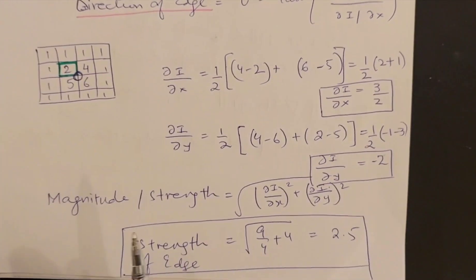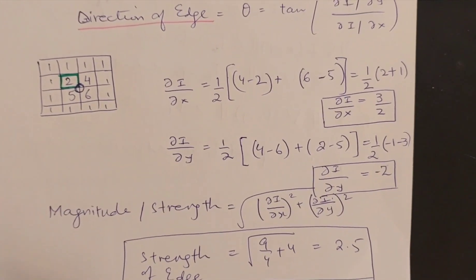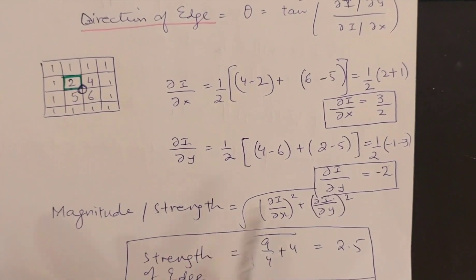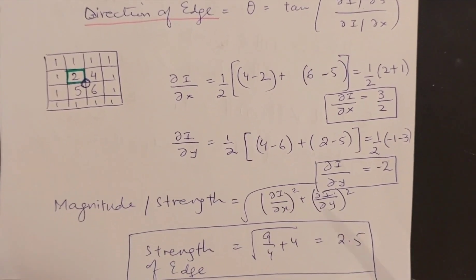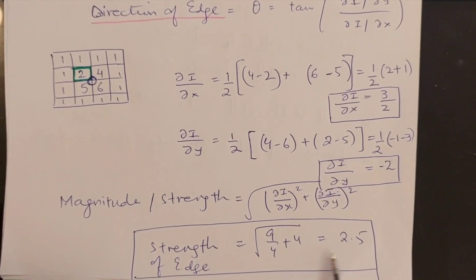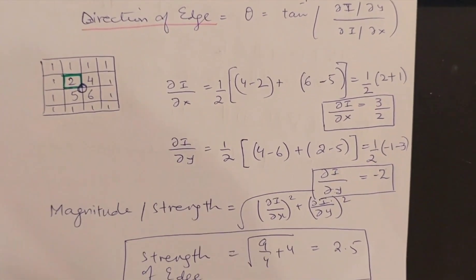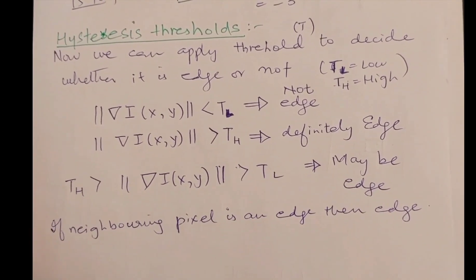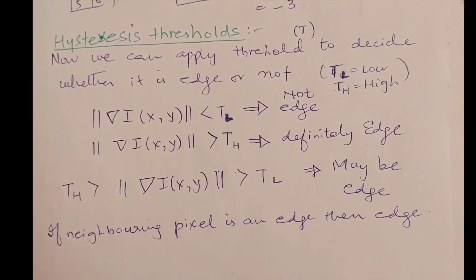If I find the magnitude of the edge with the help of these two, I will simply square them up, add them, and take the square root. So this will give me the strength of the edge, which is coming out to be 2.5.